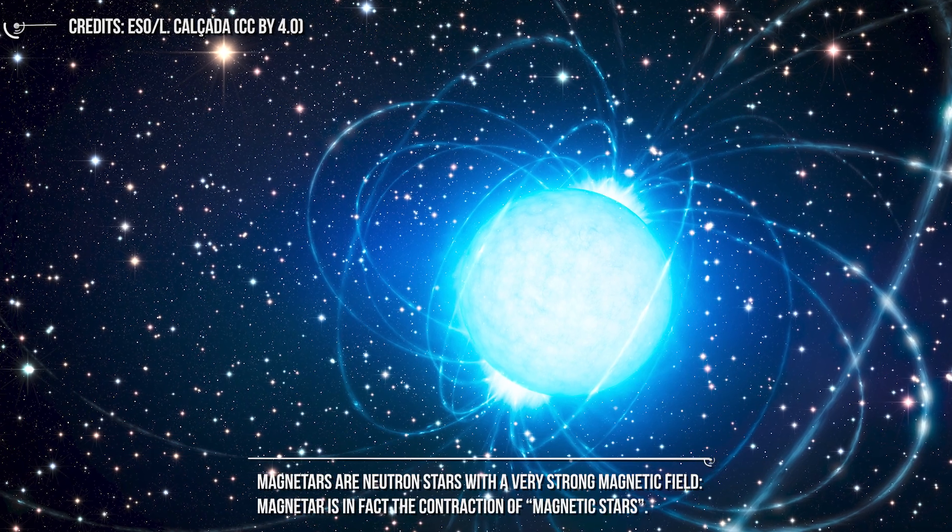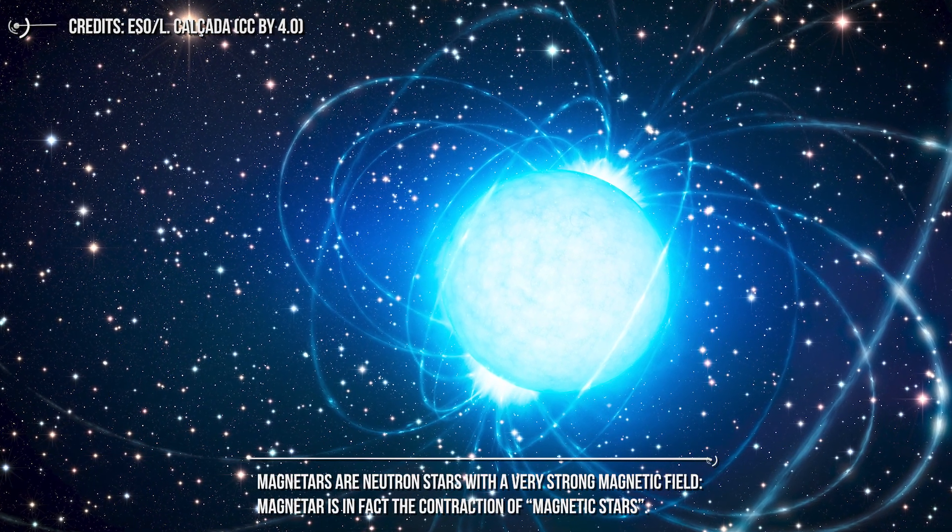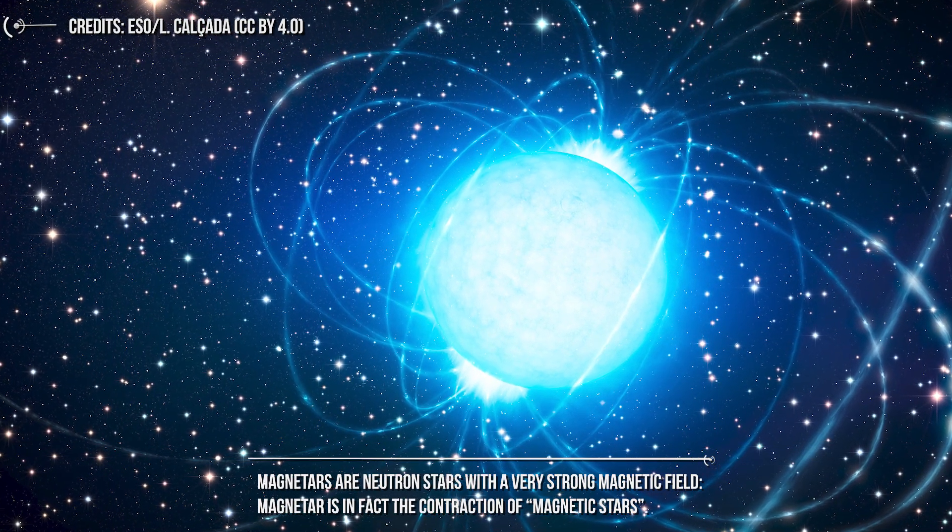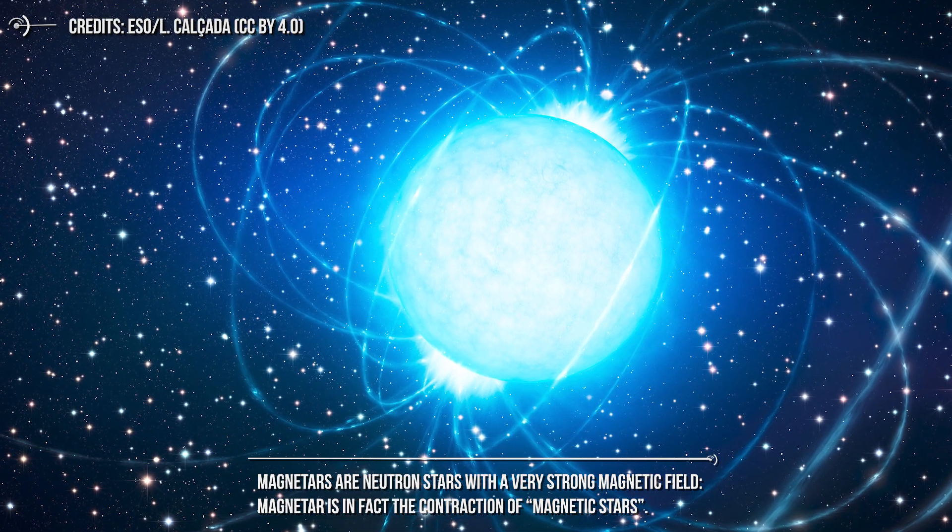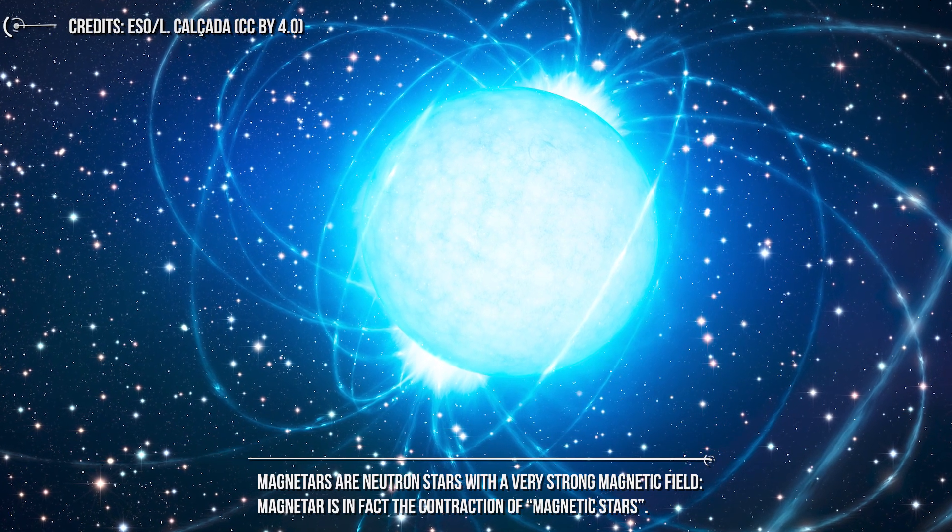Magnetars are neutron stars with a very strong magnetic field. Magnetar is in fact the contraction of magnetic stars. But how are neutron stars formed? And why do some of them become magnetars?